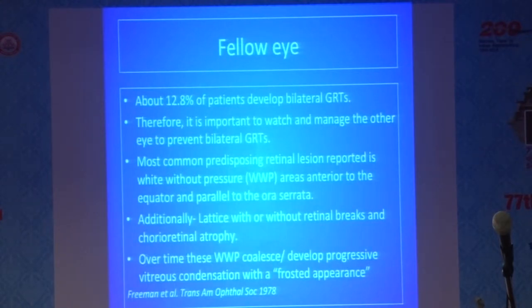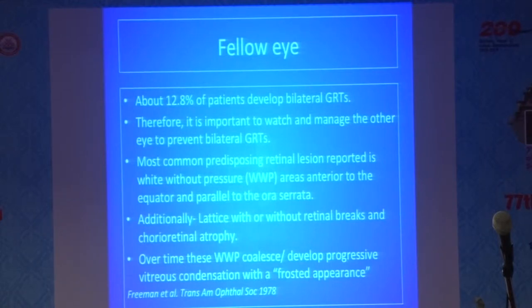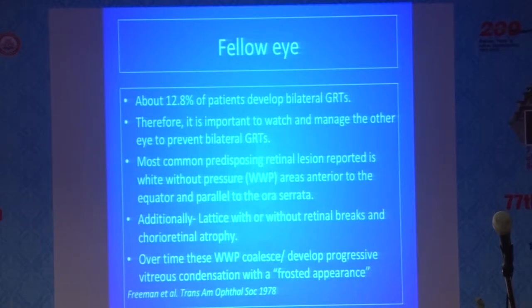Regarding the fellow eye, about 12.8 percent of patients have bilateral giant retinal tears. Therefore, it is important to watch and manage the other eye to prevent these cases. The most common predisposing retinal lesion reported in the fellow eye is white-without-pressure areas, which are anterior to the equator and parallel to the ora serrata. Additionally, there may be presence of lattice, with or without retinal breaks, and chorioretinal atrophic areas.